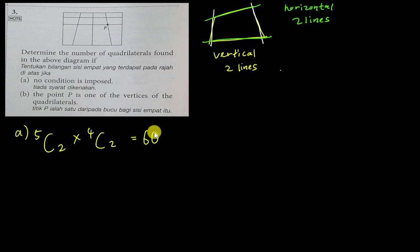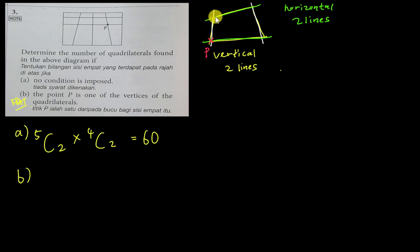That's quite straightforward for part A with no condition. For part B — the HOTS part — point P is one of the vertices of the quadrilateral. This means P can be at any one of the corner vertices of the shape.